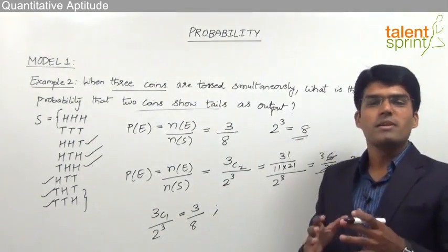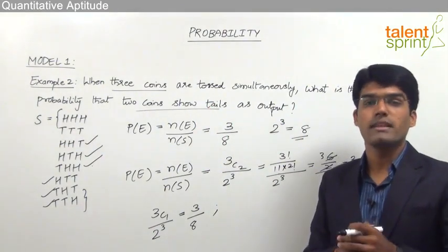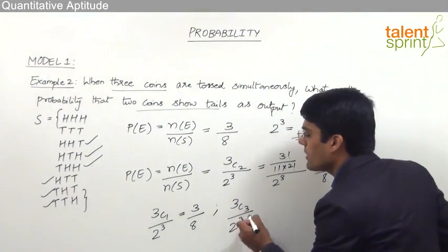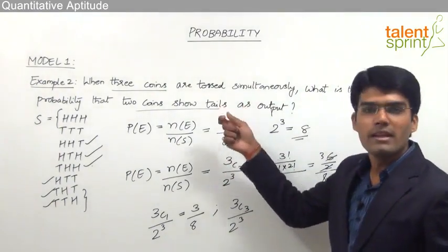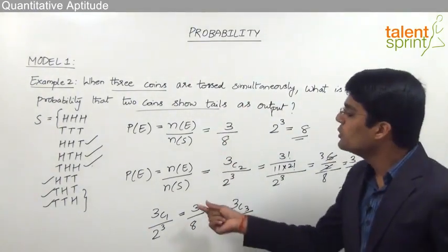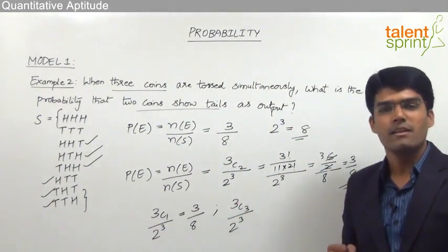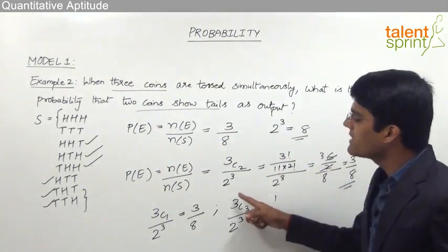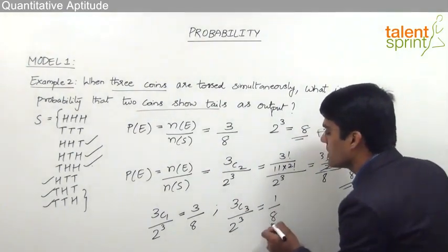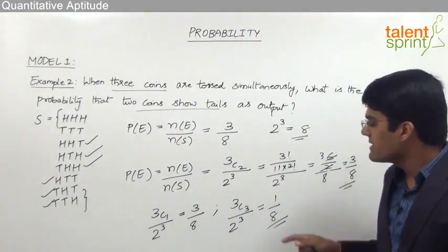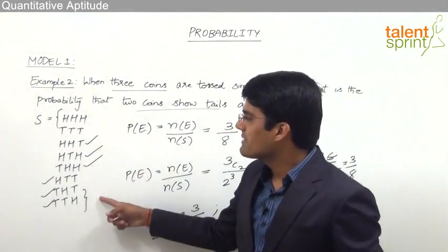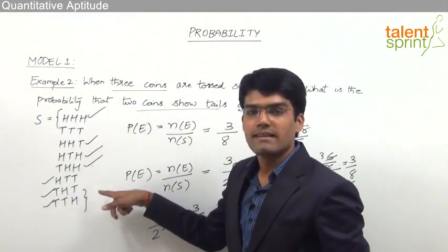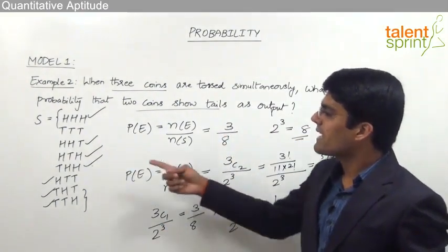The probability that all three coins show heads: we need to select all 3 coins out of 3, which is 3C3. And 3C3 = 1 since NCR = 1 when R = N. So the probability is 1/8. This is confirmed by the sample space — only one outcome has all three heads. Likewise, the probability that all three show tails is also 1/8, since again only one such outcome exists.